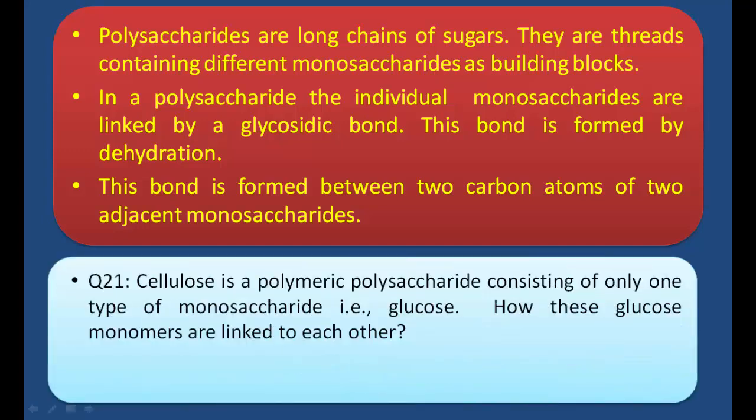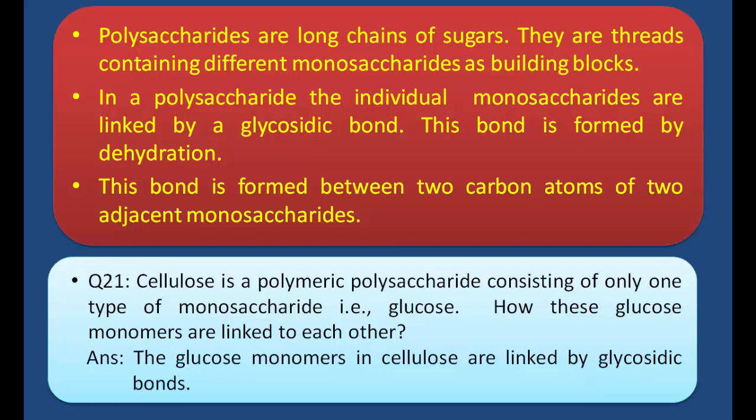Q21: Cellulose is a polymeric polysaccharide consisting of only one type of monosaccharide, i.e., glucose. How are these glucose monomers linked to each other? Answer: The glucose monomers in cellulose are linked by glycosidic bonds. As mentioned in the key points, in any polysaccharide, monosaccharide units are joined by glycosidic bonds. In cellulose, the monosaccharide unit is glucose, and these glucose units are linked to each other by glycosidic bonds.